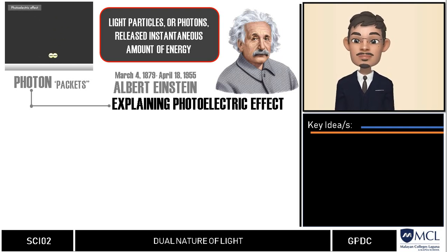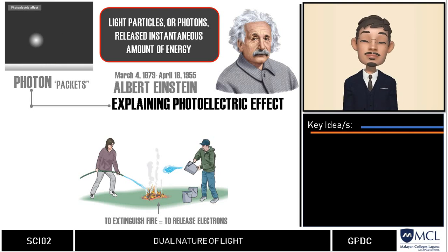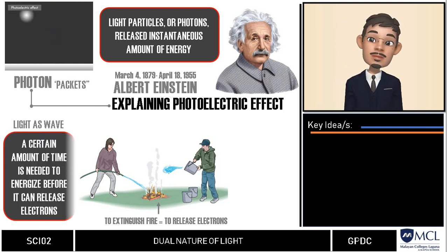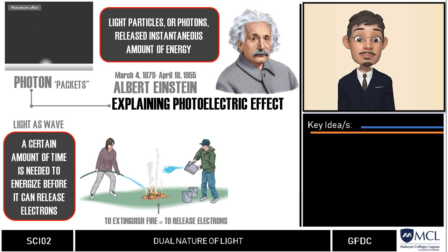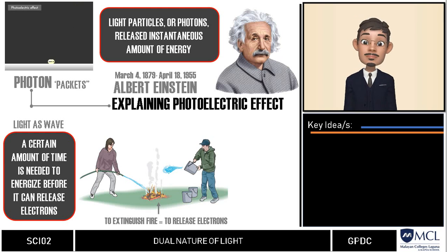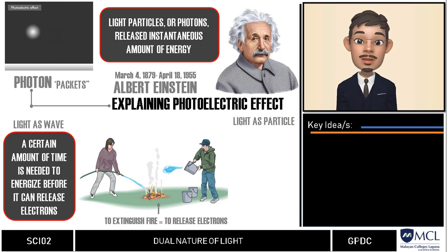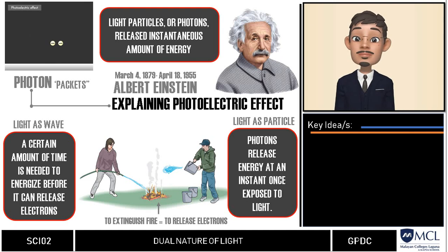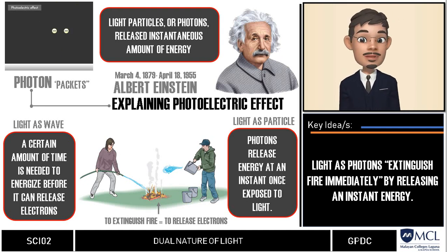To help understand this, here is an analogy. If we need to extinguish a fire — analogous to releasing electrons when a material is exposed to light — classical wave theory says it needs a certain amount of time before it can release the electrons. This is like a stream of water from a garden hose, which needs time to extinguish the fire. Photons, as packets of energy, release an instantaneous amount of energy, analogous to a bucket full of water thrown on the fire, which extinguishes it immediately — and therefore releases the electrons instantly once exposed to light.